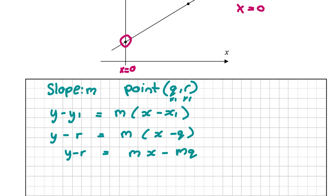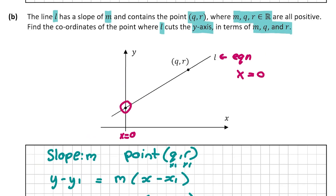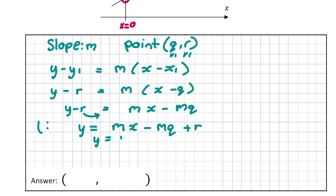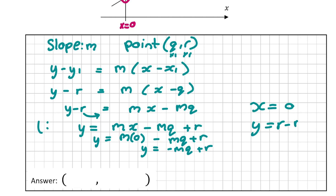Now let's put it in equation form: Y = MX - MQ + R. This is the equation of L. Now, what are the coordinates of the point where it crosses the y-axis? We let X = 0 and find Y: Y = M(0) - MQ + R, so Y = R - MQ. The coordinates of the y-intercept are (0, R - MQ), and this question is worth 5 marks.